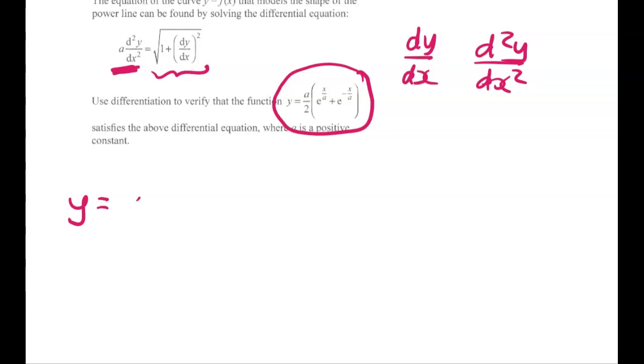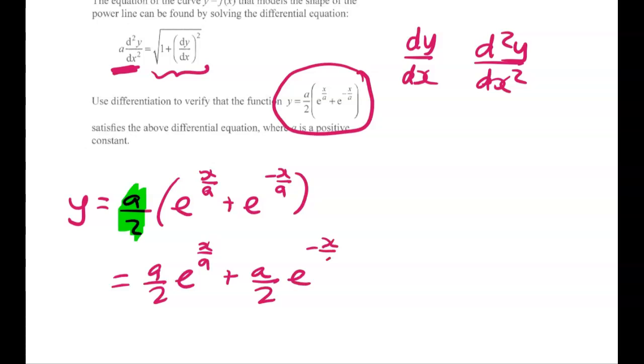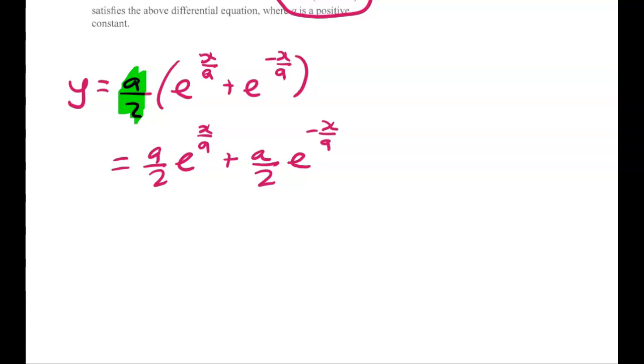So we'll start off with y is equal to this. And I think it's fine if you're confident to work with this constant sitting outside here, but for many of you it's probably easier if you expand it first, so that's what I'm doing in this video. And we get this. So a over 2, e to the negative x over a. Remember that a is a constant, x is our variable.